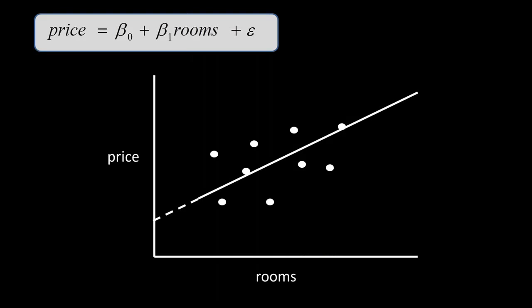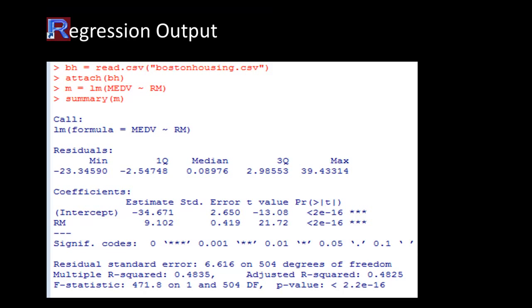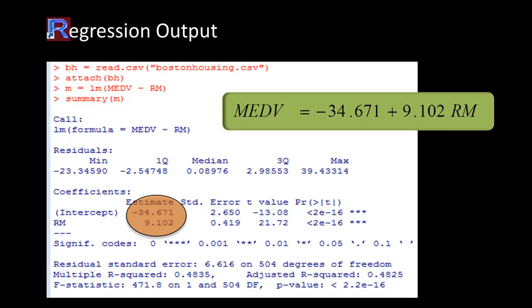This is a recap of the model from the last lecture: we have number of rooms and the prices of homes, and we plotted the least squares line. Once you plot a least squares line you have errors — the distance between the actual values and the predicted values on the line. That difference is called the residual in regression.